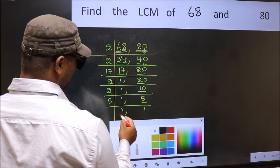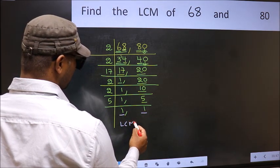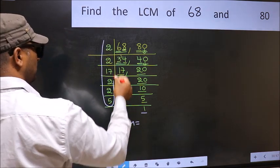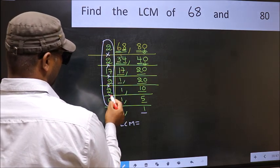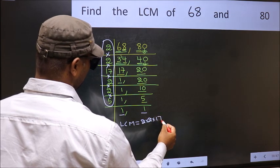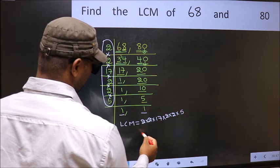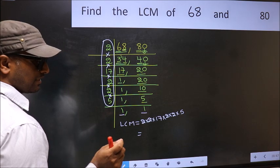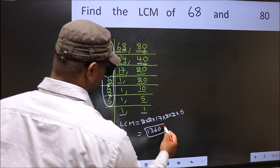So we got 1 in both the places. So our LCM is, LCM is the product of these numbers. That is 2 into 2 into 17 into 2 into 2 into 5. When we multiply these numbers, we get 1360 is our LCM.